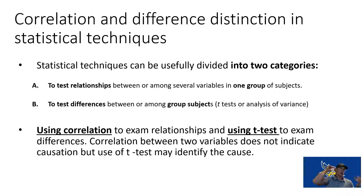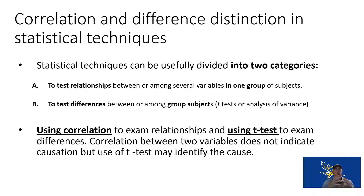In a relationship-based test, we have one group or one set of participants — one sample. To test a difference, we have to compare two samples or two groups comparatively. We compare two separate groups based on our independent variable. When we use a correlation, we examine relationships. When we use a t-test, we examine differences.